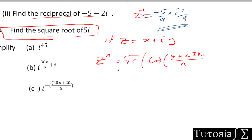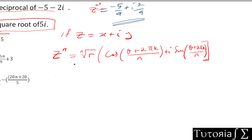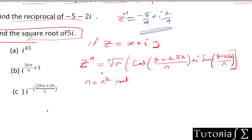In this formula, n is the index of the root — for the square root n = 2, cube root n = 3, and so on. r = √(a² + b²) is the modulus, and θ = tan⁻¹(b/a) is the argument. The values of k run from 0 to n - 1, giving n distinct roots. For the square root, n = 2, so k = 0 and k = 1.